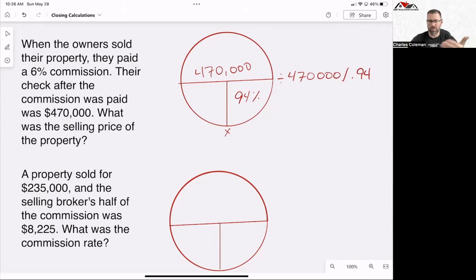So we're going to do 470,000 divided by 0.94. And that is going to give us $500,000, which would go here with the total. And so we know that the selling price for this home is $500,000. Awesome.